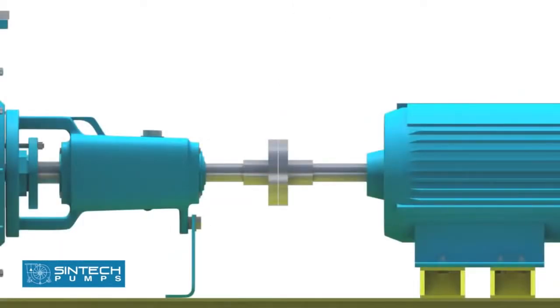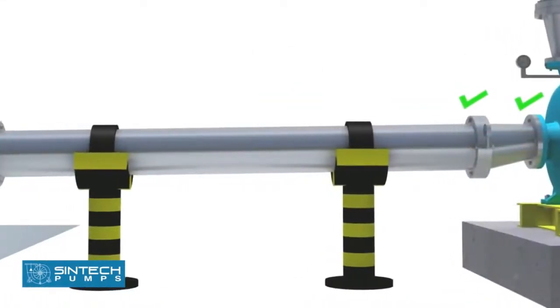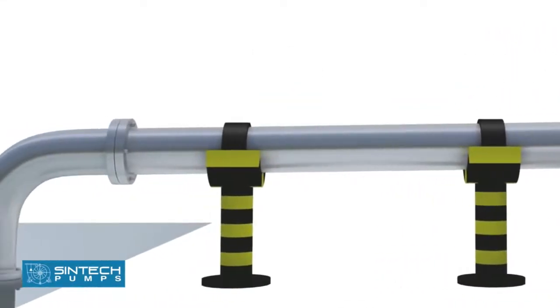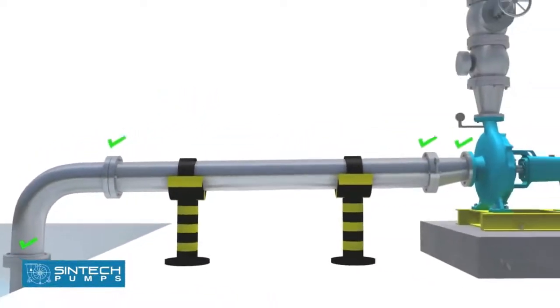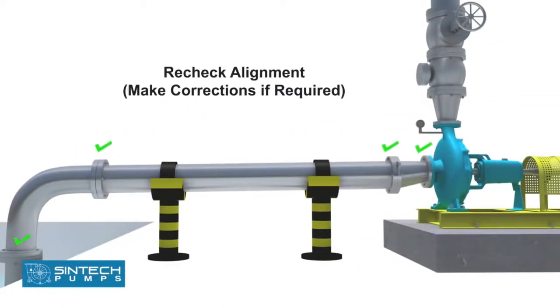Once this is completed, the alignment should be rechecked and similar readings should be obtained. If this is not the case, then the piping should be investigated and suitable corrections should be made. If this is left unattended, it can cause stress on the pump casing.